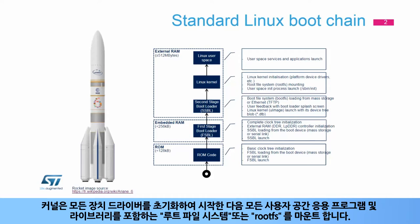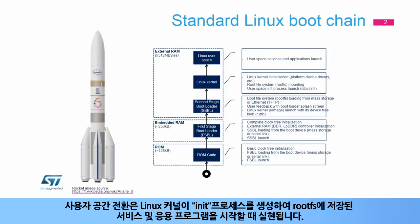The kernel starts by initializing all its device drivers, then it mounts the root file system, or root FS, that contains all the user space applications and libraries. The user space switch is realized when the Linux kernel creates the init process that launches the services and applications stored in the root FS.